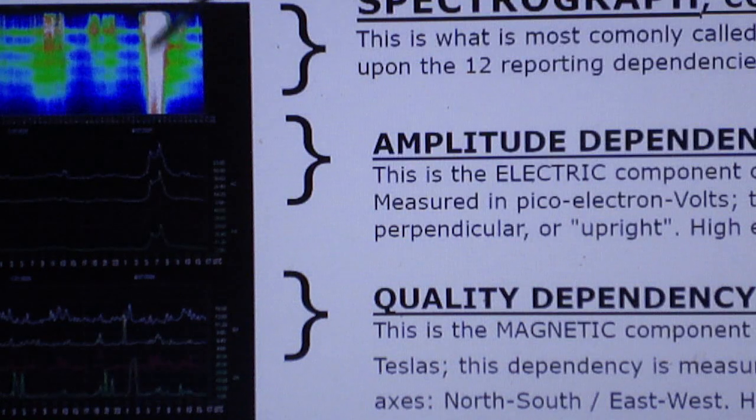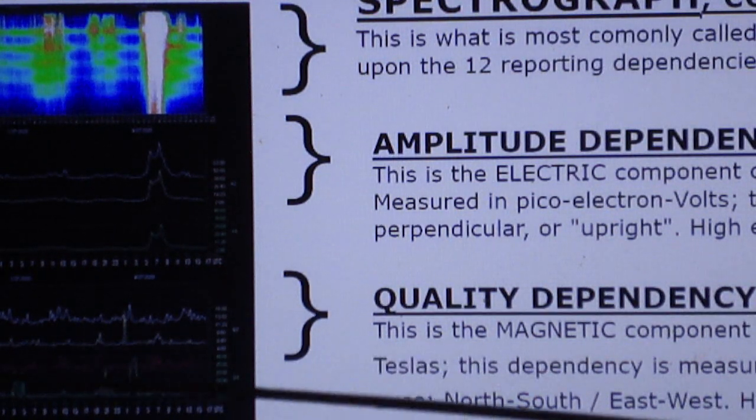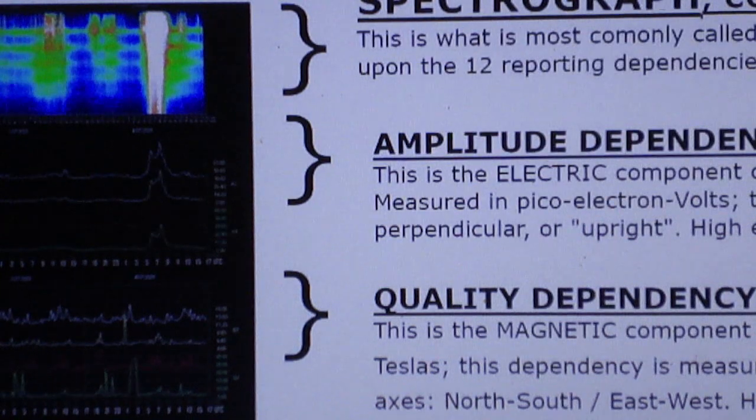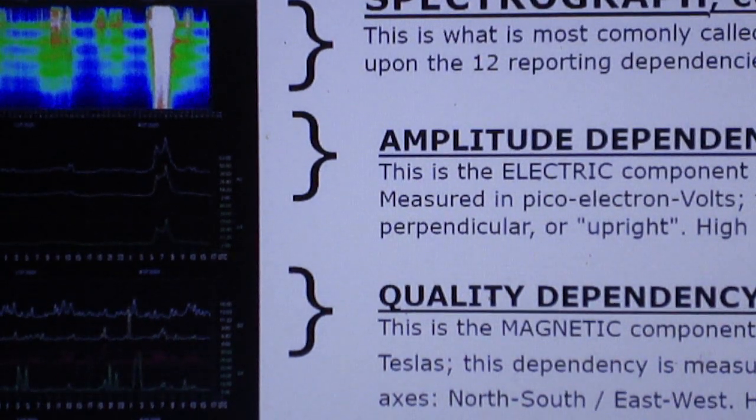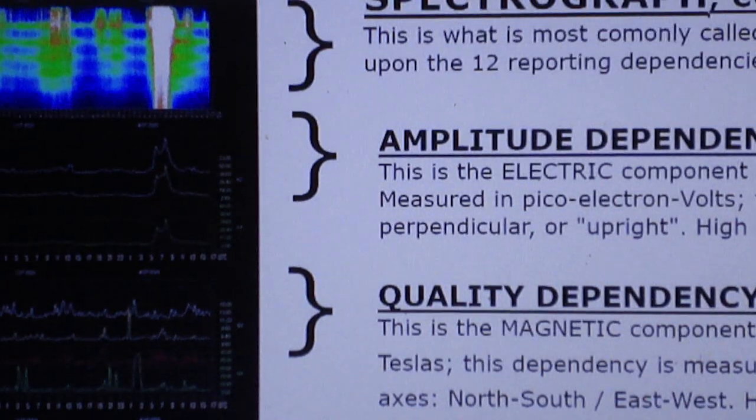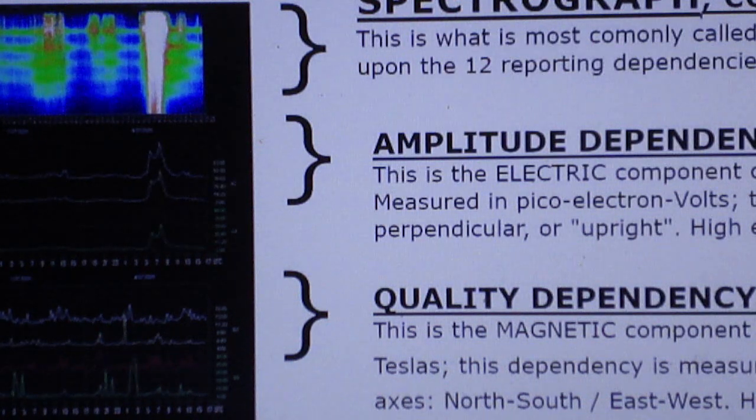All right, so the next one up is the quality dependency. And the same thing here, there are four color modes and these represent the different bandwidths that are reporting. Okay, so the quality is the magnetic component.